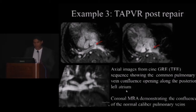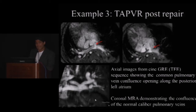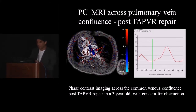We receive many referrals for post-repair total anomalous pulmonary venous return evaluation. An axial stack of spoiled gradient echo bright blood provides excellent contrast between the blood pool and vessel walls, allowing assessment of the confluence and its opening along the repaired TAPVR posterior to the atrial chamber. The MRA also complements the bright blood technique, demonstrating normal caliber veins and the confluence. Phase contrast can document flow across the confluence and provide a gradient from the velocity obtained.